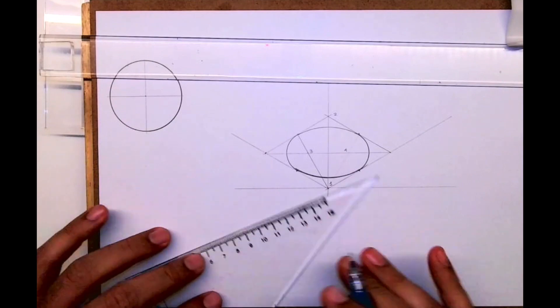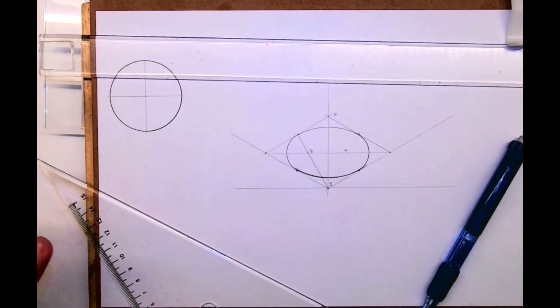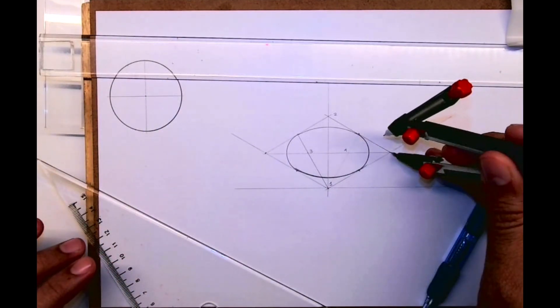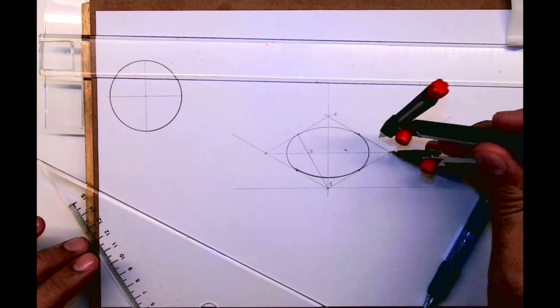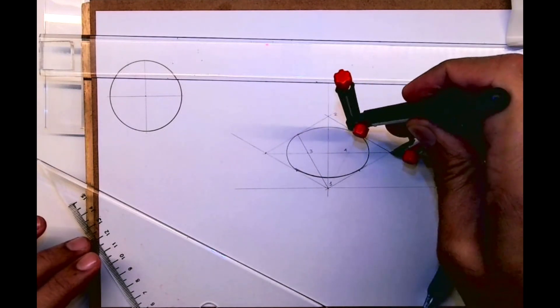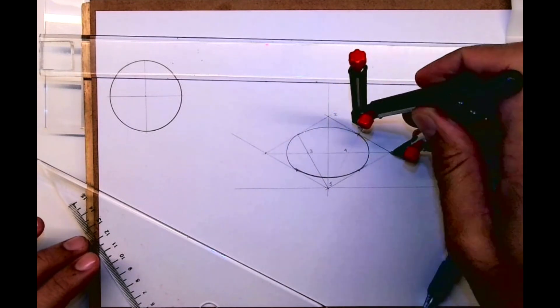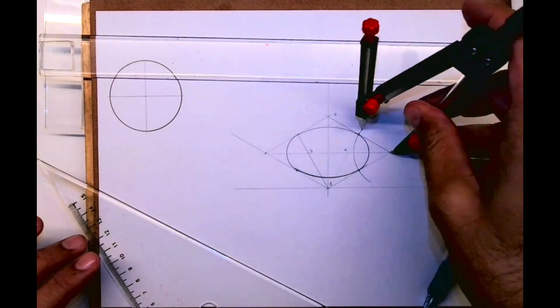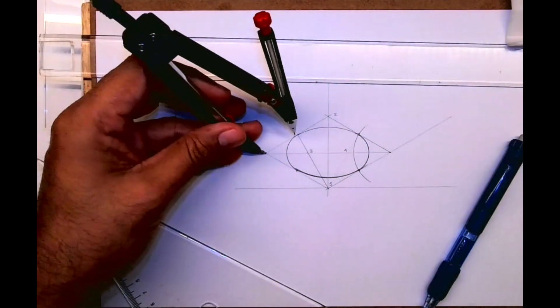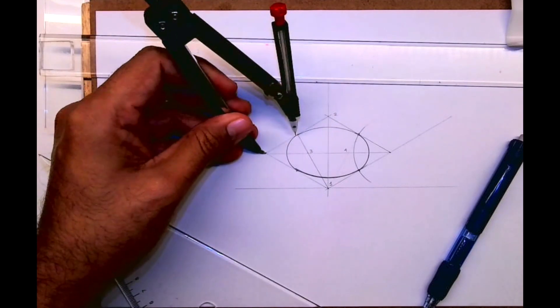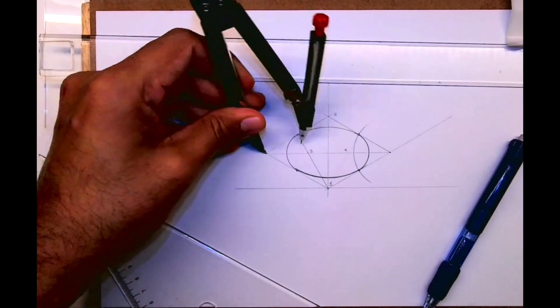Now there is one more method that's called ortho four center method. That's based on centerline method which I will explain to you in some other video. Right now what you do, from this corner to this midpoint you draw R. I'm drawing here only so you will know the difference. Take from this point to the midpoint, you draw R.